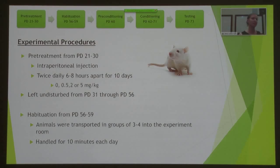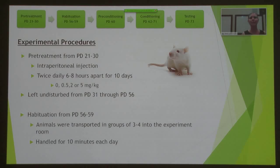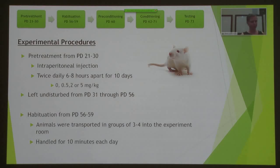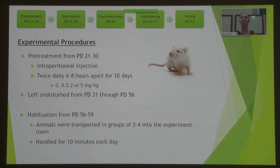Early adolescence in male rats corresponds to postnatal day 21 to about 30. Within this 10-day period, we gave them twice-daily injections of methylphenidate six to eight hours apart at four dosages: 0, 0.5, 2, or 5 milligrams per kilogram. We then left them undisturbed until they reached early adulthood, around postnatal day 60.